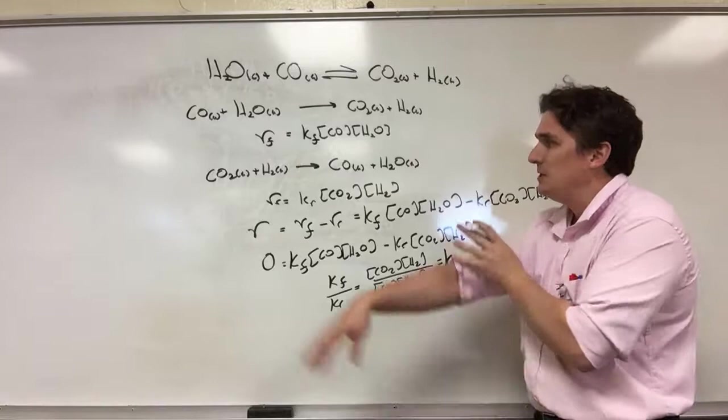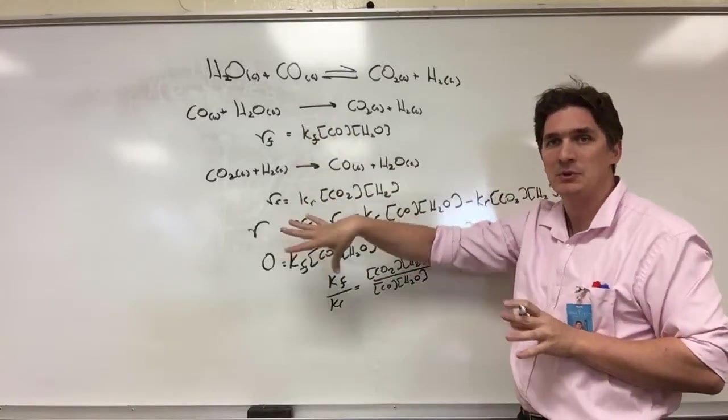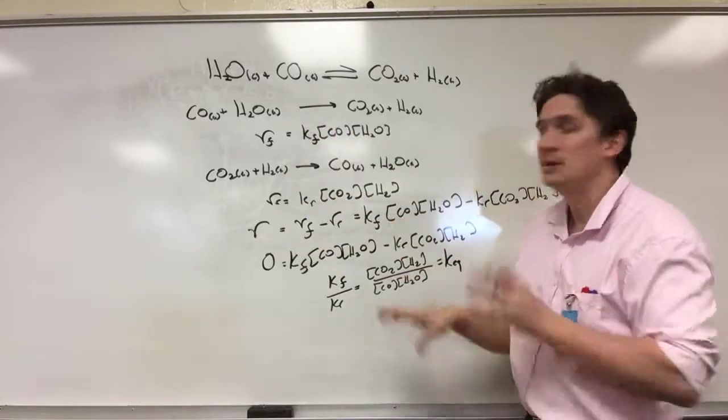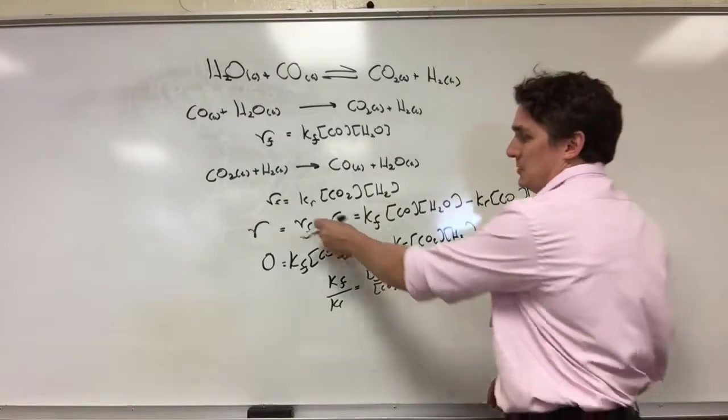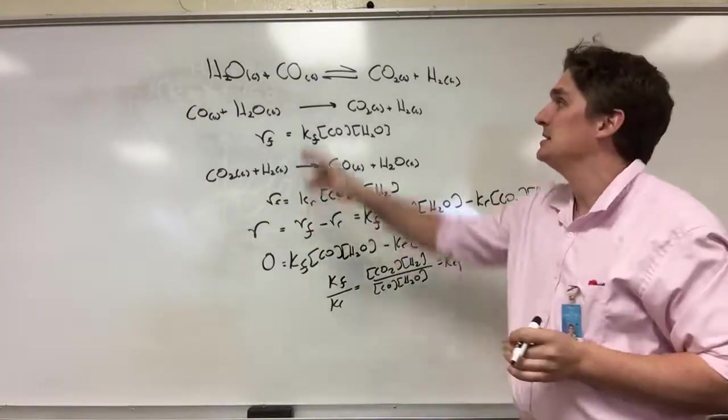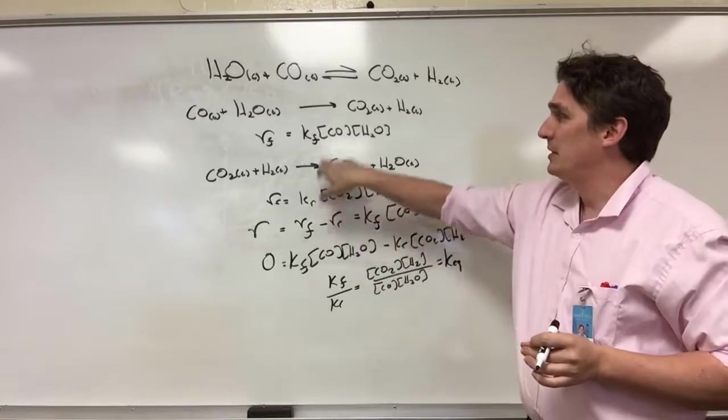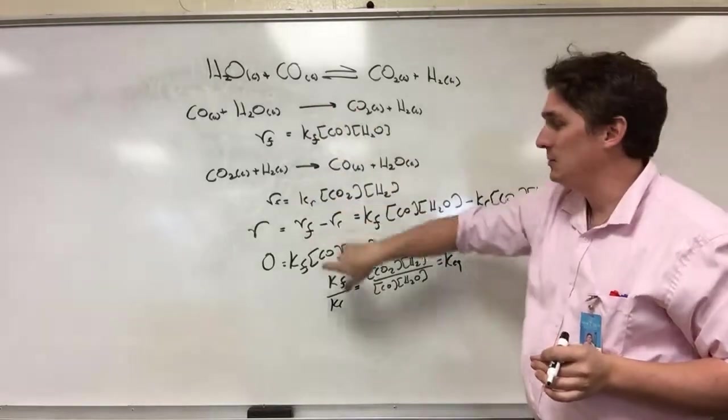So what we get if we take a rate law and derive it for a reversible reaction: one, we get that the total rate is the rate of the forward reaction minus the reverse reaction. And ideally, if we can write these as elementary reactions, we just derive each of them and then we take their differences.